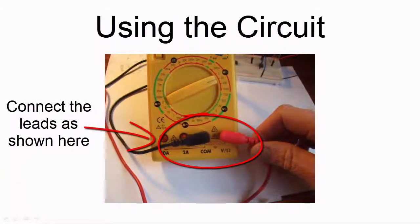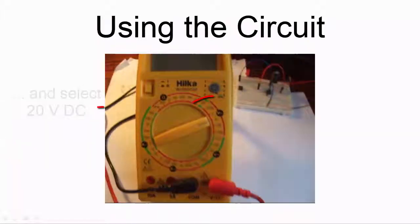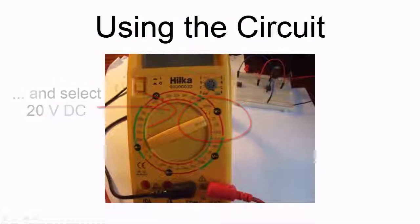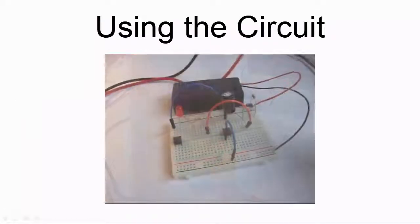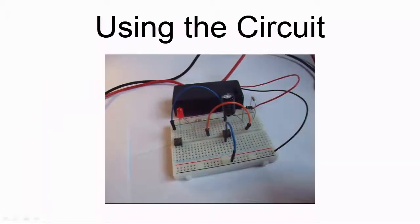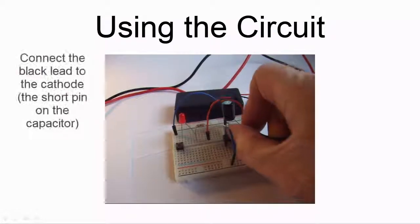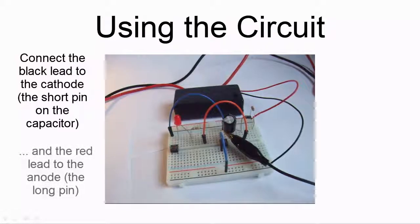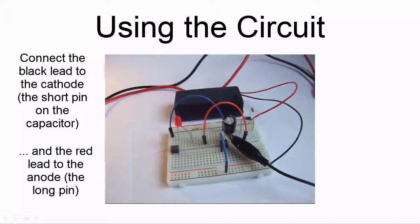If you have a multimeter, you can see the voltage across the capacitor increase and decrease as buttons S1 and S2 are pressed. Connect the multimeter probes to the capacitor pins. I've used crocodile or alligator clips to make it a bit easier to do this, otherwise you'll need an extra pair of hands.